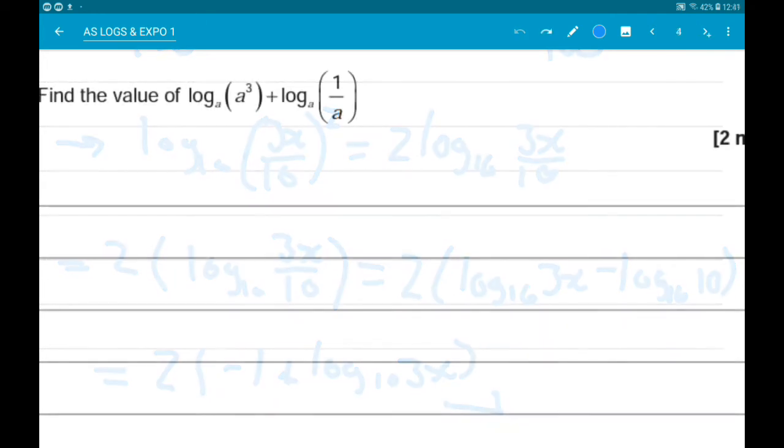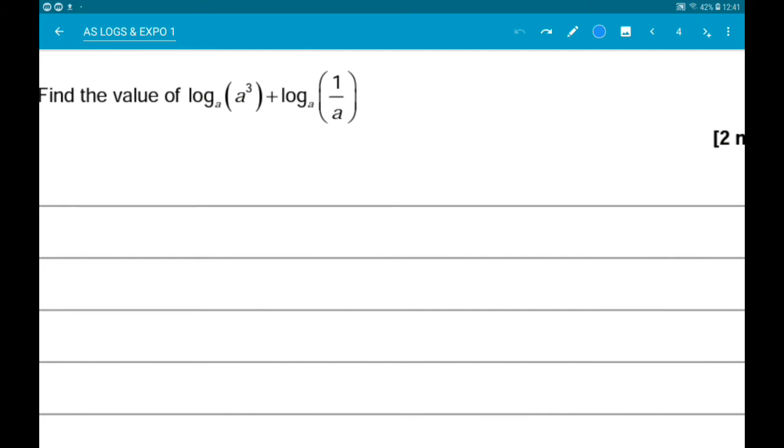Okay, next up, find the value of log base a of a cubed and log base a of 1 over a. Okay, log base a of a cubed is asking what power is a cubed of a. So what number do we need to raise the base to, to get a cubed? So it's 3.